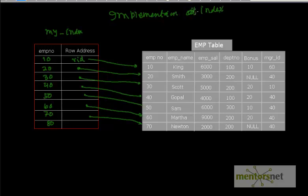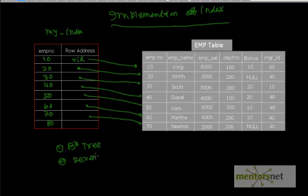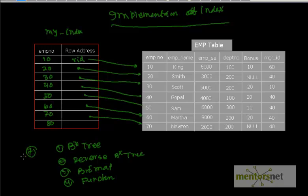Oracle provides different types of index implementations based on different functionality and use cases. There are indexes called B-star tree index, reverse B-star index, B-star tree index, bitmap index, function-based index, cluster B-star tree index, and so on — about seven to eight different types. In this course, we are going to discuss four important types of index implementation, and for the remaining ones we'll give examples so you know how to extend those.